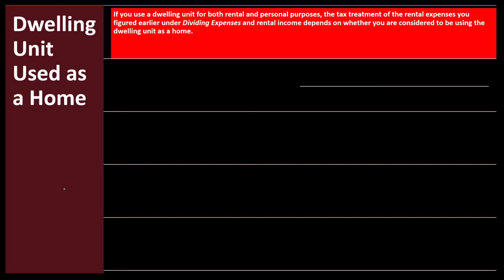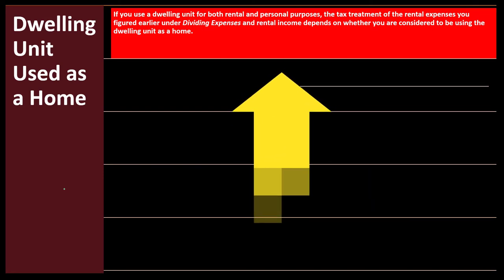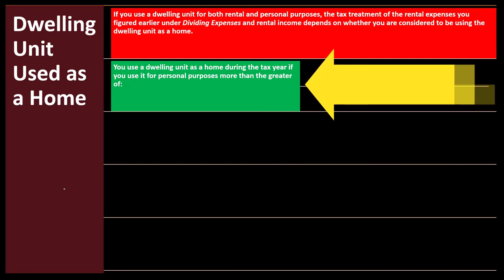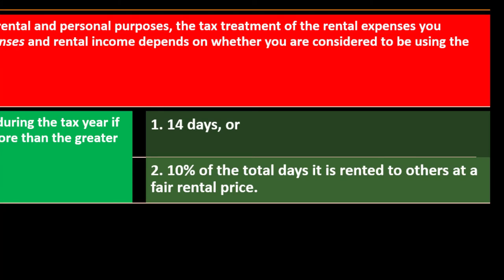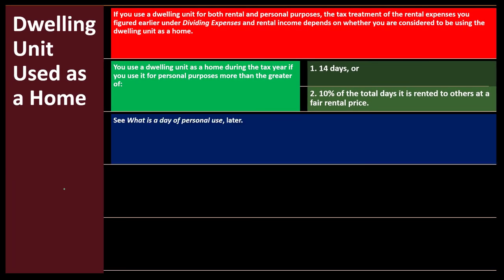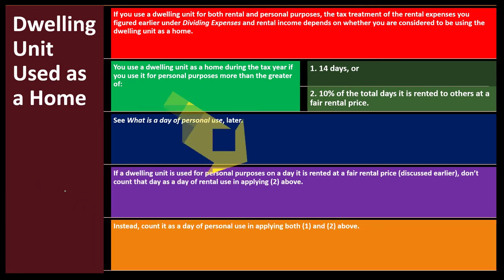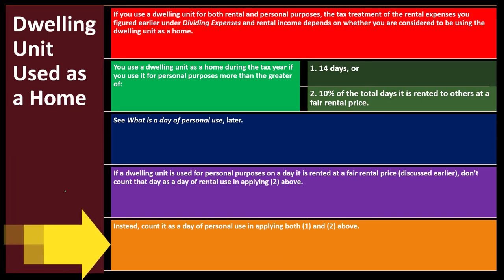Dwelling unit used as a home: if you use a dwelling unit for both rental and personal purposes, the tax treatment of rental expenses depends on whether you are considered to be using the dwelling unit as a home. You use the dwelling unit as a home during the tax year if you use it for personal purposes more than the greater of: (1) 14 days, or (2) 10% of the total days it is rented to others at a fair rental price. If a dwelling unit is used for personal purposes on a day it is rented at a fair rental price, don't count that day as rental use — count it as personal use for both tests.